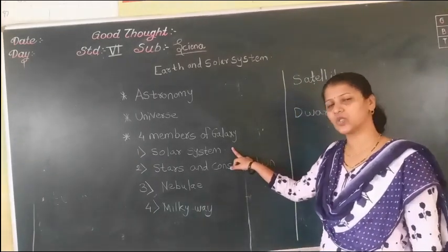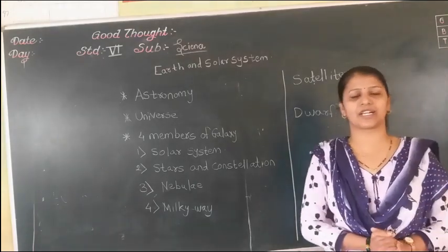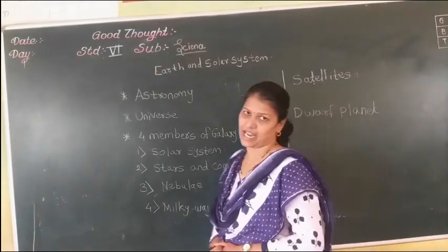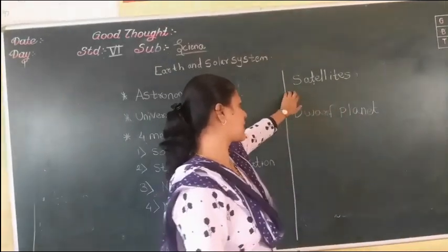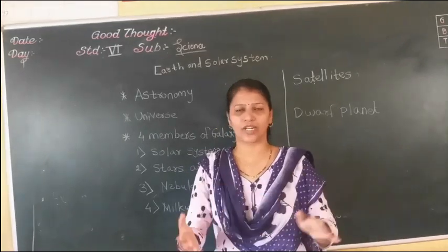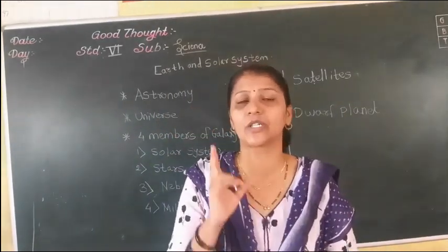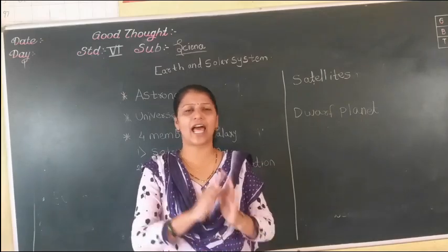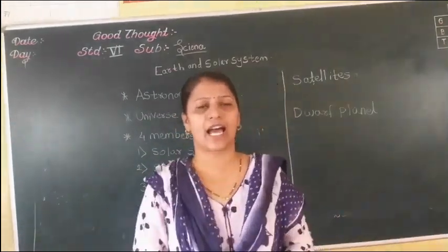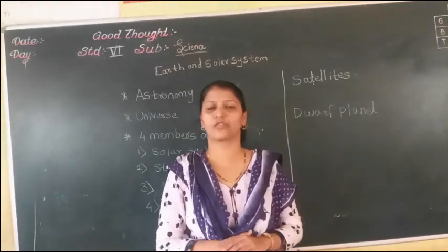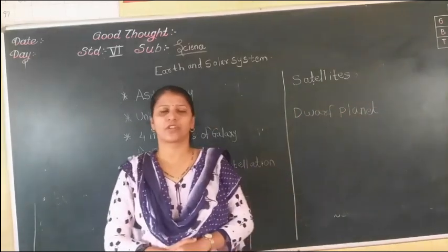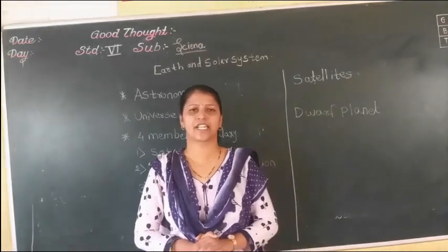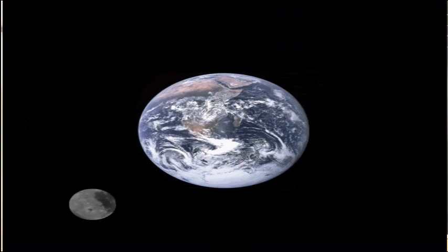We have already discussed about the Solar System, which consists of eight planets. Along with the eight planets, there are also satellites. There are mainly two types of satellites: natural and artificial. The natural satellite of the Earth is the Moon.